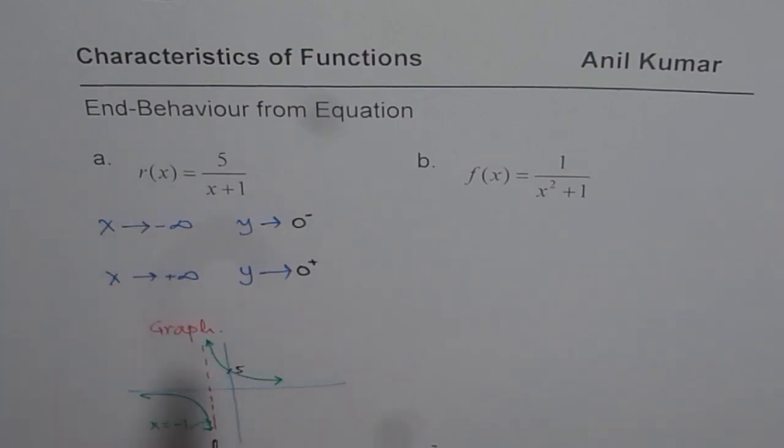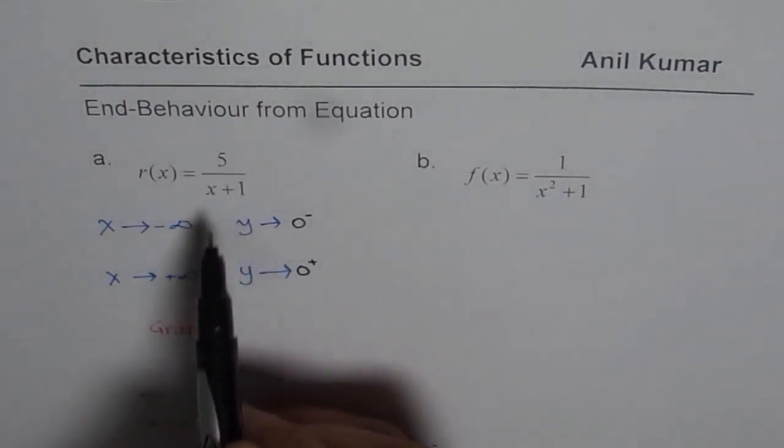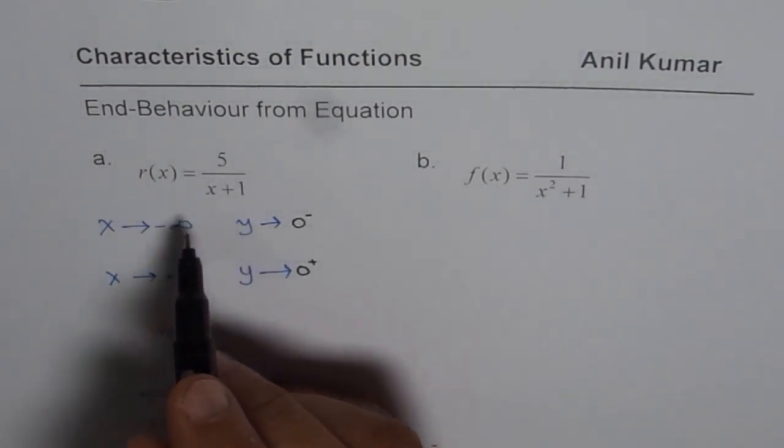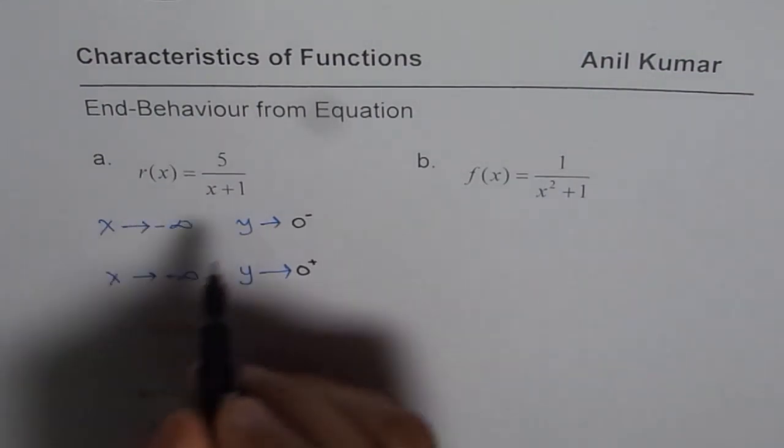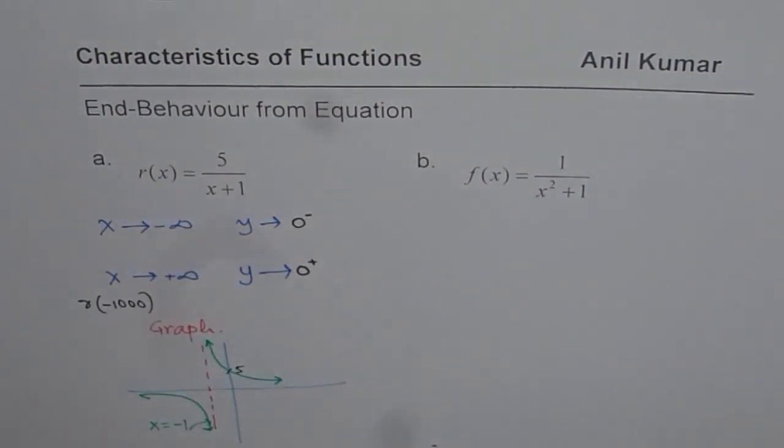So what now we are going to do is, we know negative large value could be like negative 1,000. So if I replace x with negative 1,000, that is to say, if I write what is the value of the function r of minus 1,000. So r of minus 1,000 we can calculate.